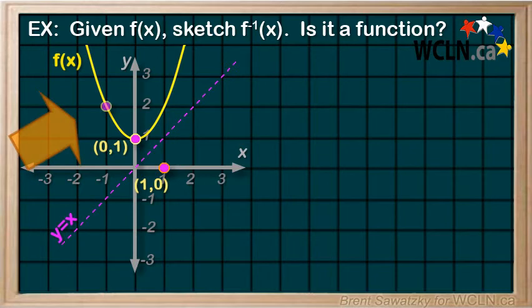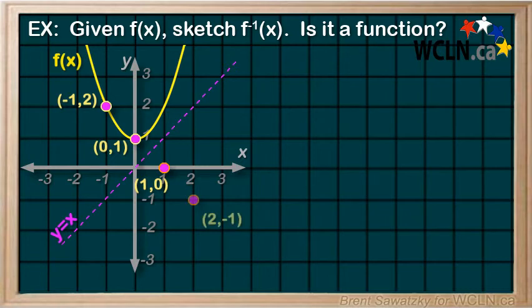And this point here, (-1,2)—again, switch the x and y—we get (2,-1). And we can plot that here.